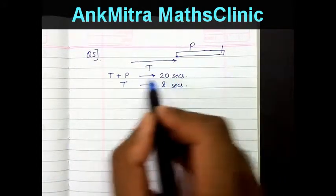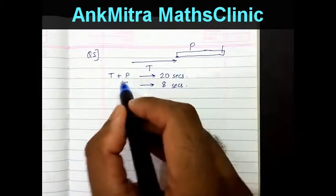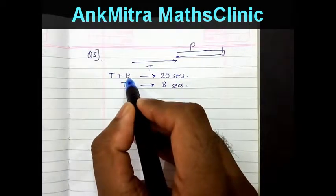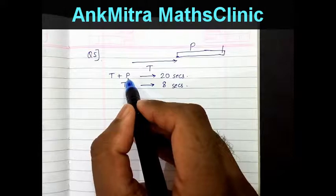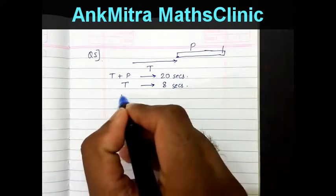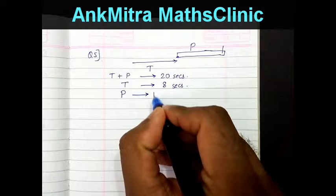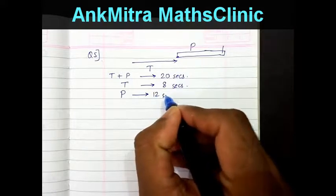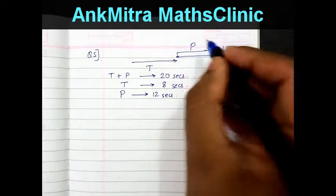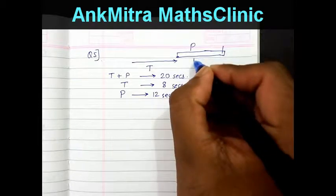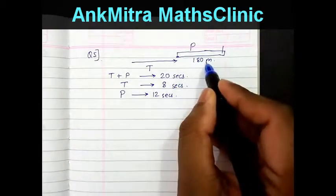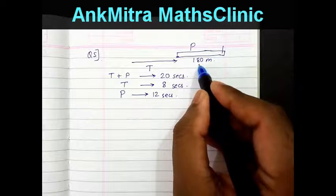Since T takes 8 seconds to cover, from the total T plus P we can deduct 8 seconds to find the time needed to cover only the platform length P. So P takes 12 seconds. The platform length is given as 180 meters.